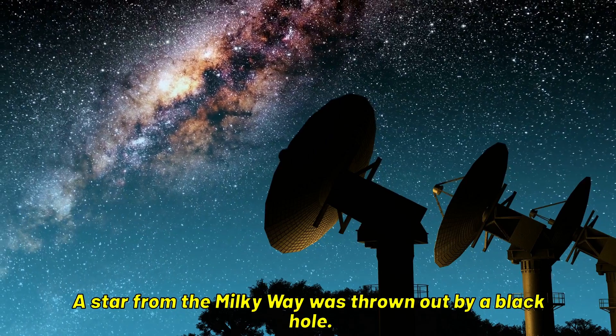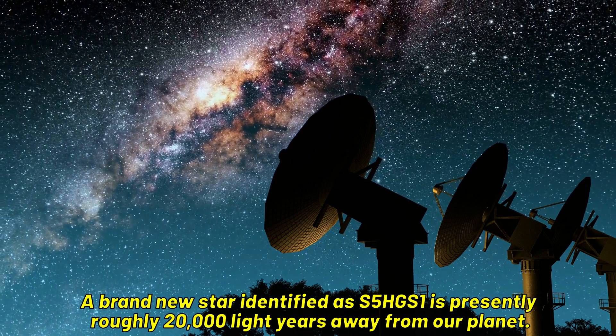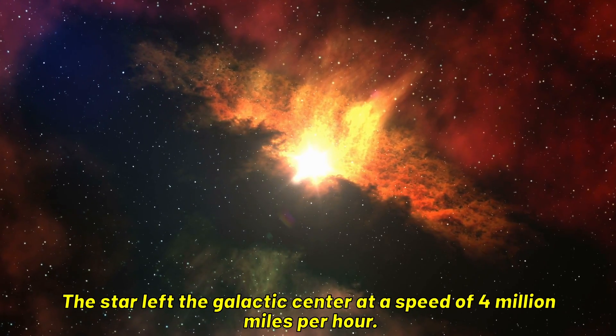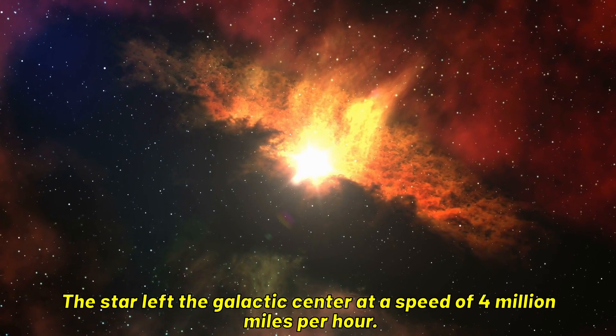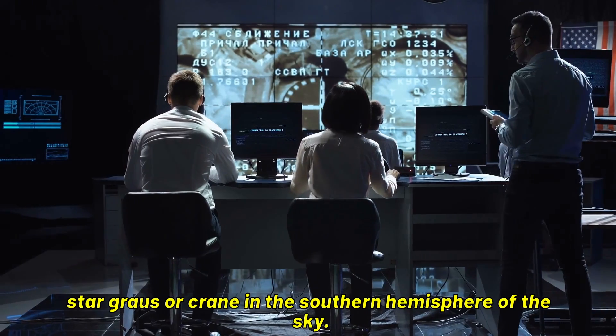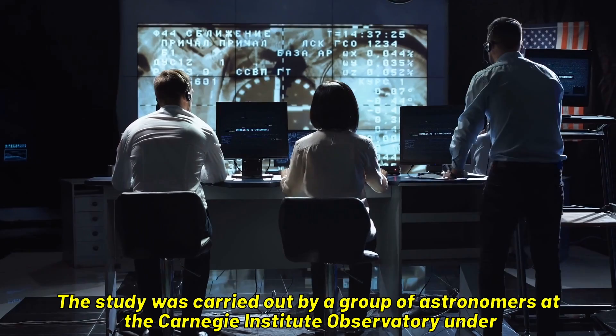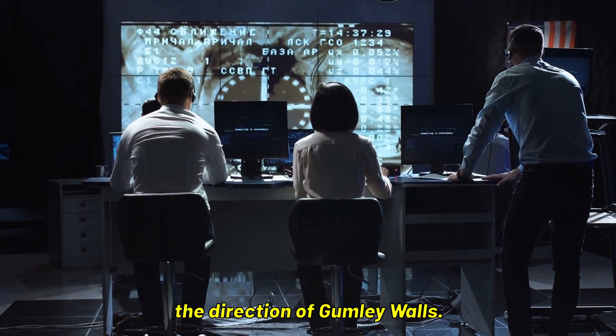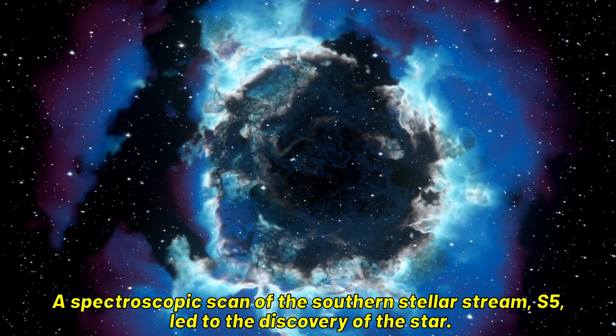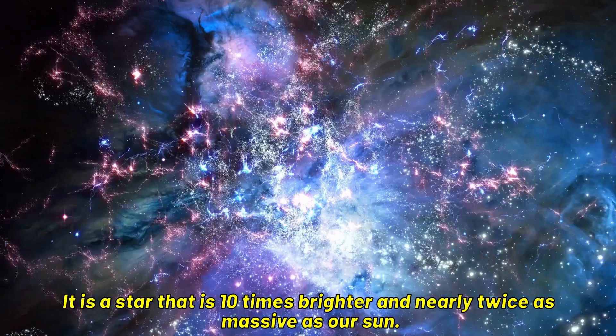A star from the Milky Way was thrown out by a black hole. A brand new star identified as S5-HGS1 is presently roughly 20,000 light-years away from our planet. The star left the galactic center at a speed of 4 million miles per hour. It is currently moving towards the depths of intergalactic space and passing near the star Graeus or Crane in the southern hemisphere of the sky. The study was carried out by a group of astronomers at the Carnegie Institute Observatory under the direction of Gumley Walls. A spectroscopic scan of the southern stellar stream, S5, led to the discovery of the star. It is a star that is 10 times brighter and nearly twice as massive as our sun.